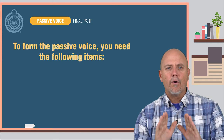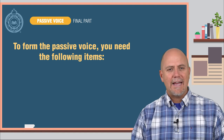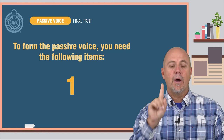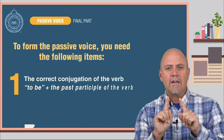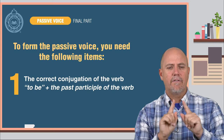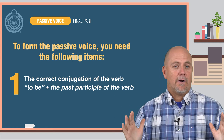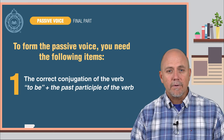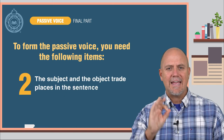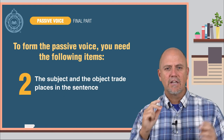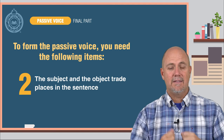To form the passive voice, you need the following items. Number one: the correct conjugation of the verb 'to be' plus the past participle of the verb. Two: the subject and the object trade places in the sentence.